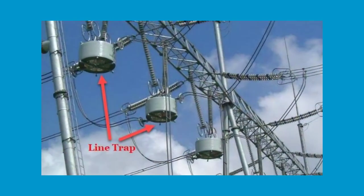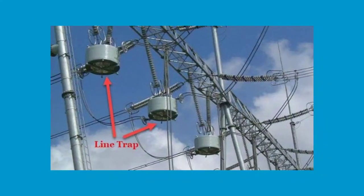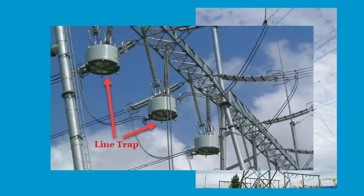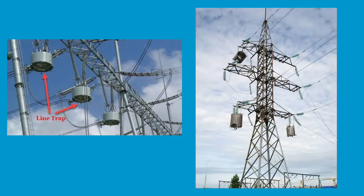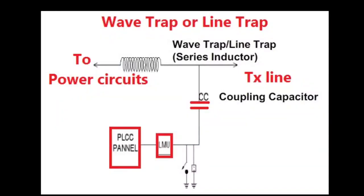A line trap is a wave trap, also called a high frequency stopper. The line traps are connected in series with the high voltage transmission lines. The main function of the line trap is to provide high impedance at power line carrier frequencies, that is 30 to 500 kHz, while introducing negligible impedance at power frequency 50Hz or 60Hz. It is a maintenance-free parallel resonance circuit mounted in line on the high voltage transmission line to prevent transmission of high frequency carrier signals or power line communication.